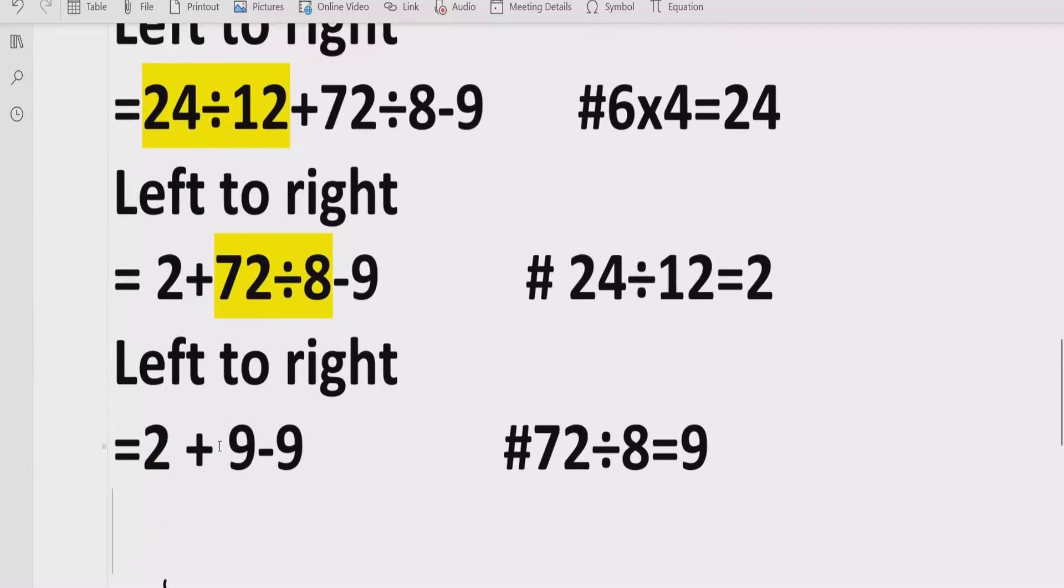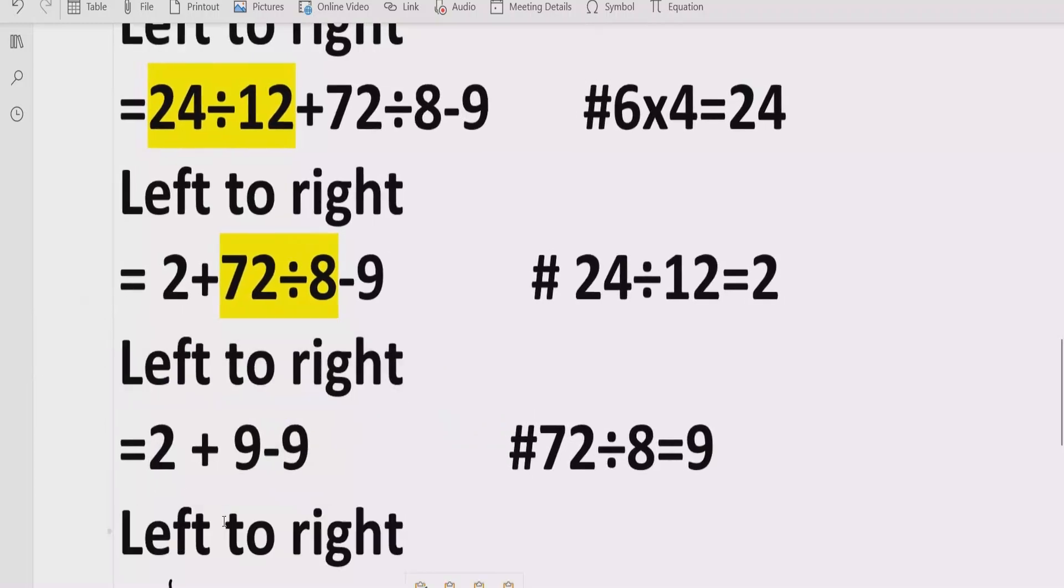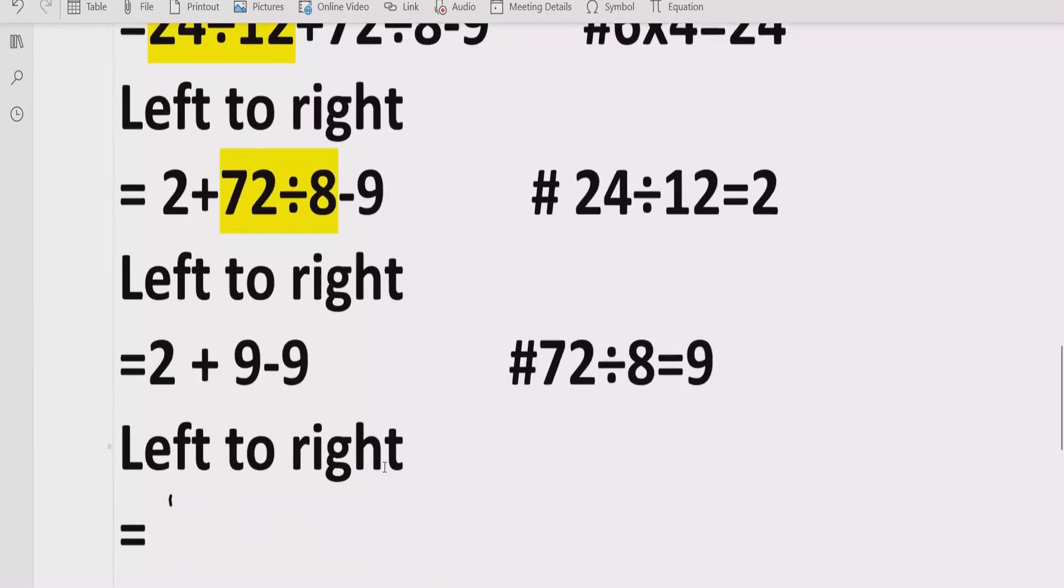Now we have two options here. We will solve this two parts or first we have to solve this one. So we are basically following the BODMAS rule. So we will solve left to right and go 2 plus 9 equals to 11 minus 9.